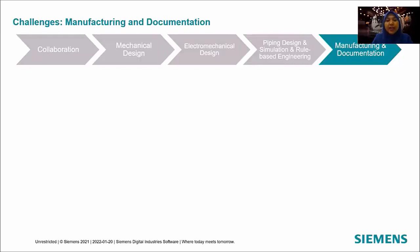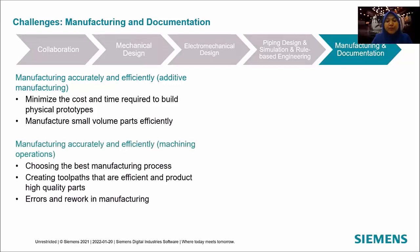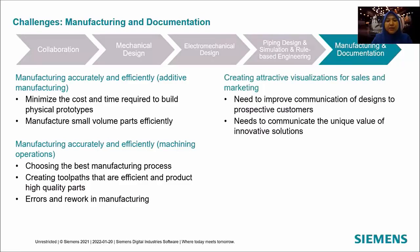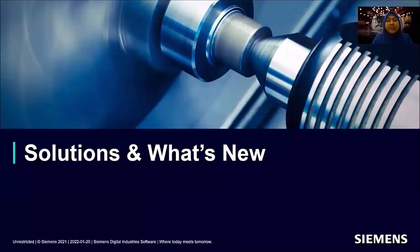The last challenge category is manufacturing and documentation. They need to minimize the cost and time to build physical prototypes and manufacture small volumes efficiently. They need to choose the best manufacturing process and create efficient toolpaths, and reduce errors and rework in manufacturing. Some manufacturers require attractive visualization for sales and marketing to improve communication. Finally, they need to create clear technical documentation so that products are manufactured, installed, used, and maintained correctly.